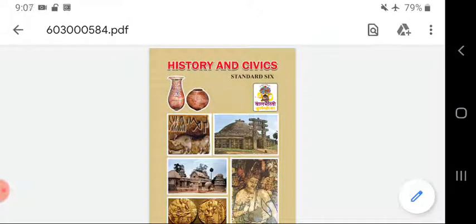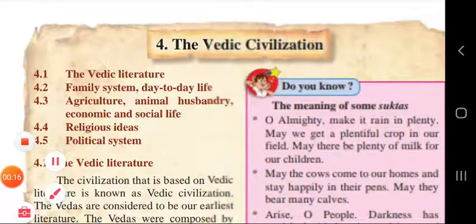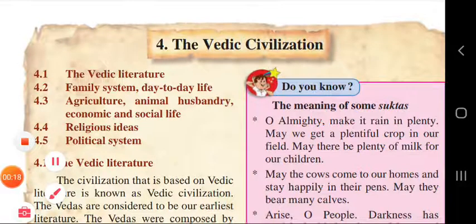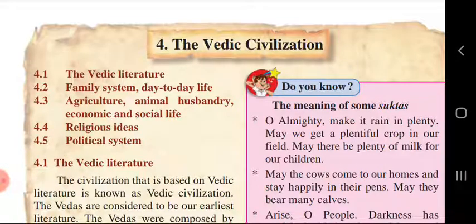Good morning. We have finished three chapters' question answers. Today we will go for the fourth chapter question answers. The chapter is the Vedic Civilization. In this we have studied about the Vedic literature, 4.2 family system, day to day life, 4.3 agriculture and animal husbandry, economic and social life, 4.4 religious ideas, 4.5 political system. So directly we will go for the question answers now.